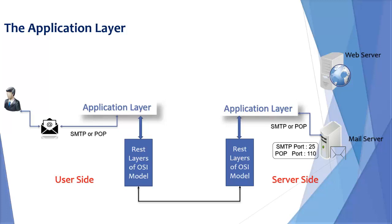At server side, application layer decides which port has to be connected for email communication. The port for SMTP is 25, and for POP, port 110 is used mostly. This is the example of how an application layer is used in a real world scenario.